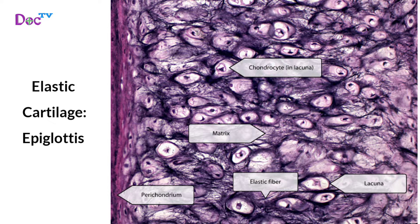Elastic cartilage, seen in the epiglottis, is similar in structure to hyaline cartilage but has more elastic fibers in its matrix. It supports the external ear and epiglottis, maintaining their shape and providing flexibility.